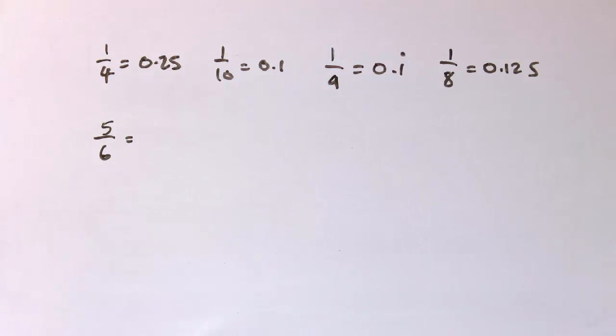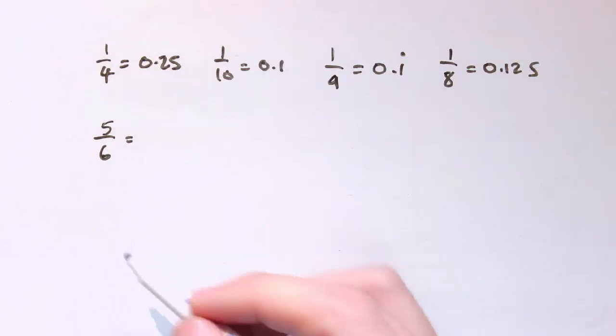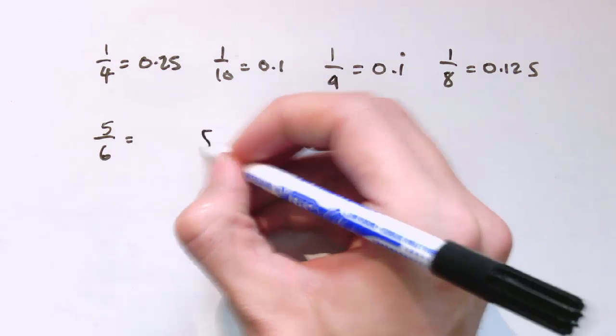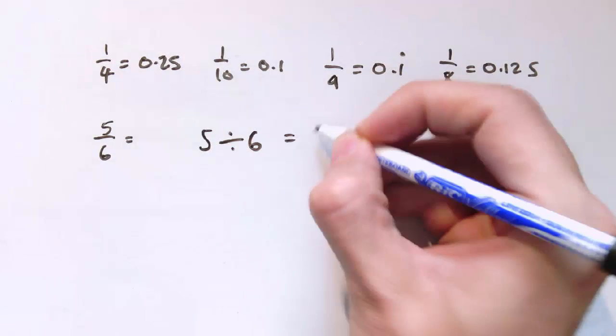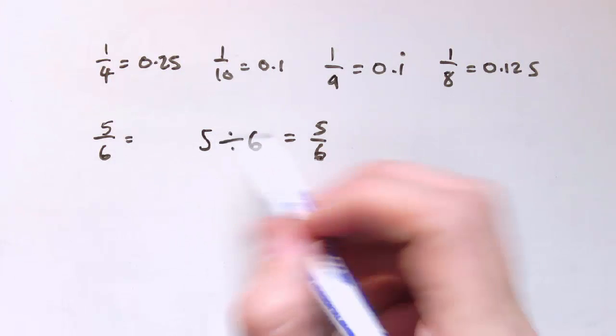But even if you don't know them, we can work them out. So let's start with doing something like 5 sixths. And essentially this method relies on just the fact that a fraction is a division. So 5 divided by 6, right, that is 5 sixths. That's kind of what this division sign means. You see, it is a fraction.